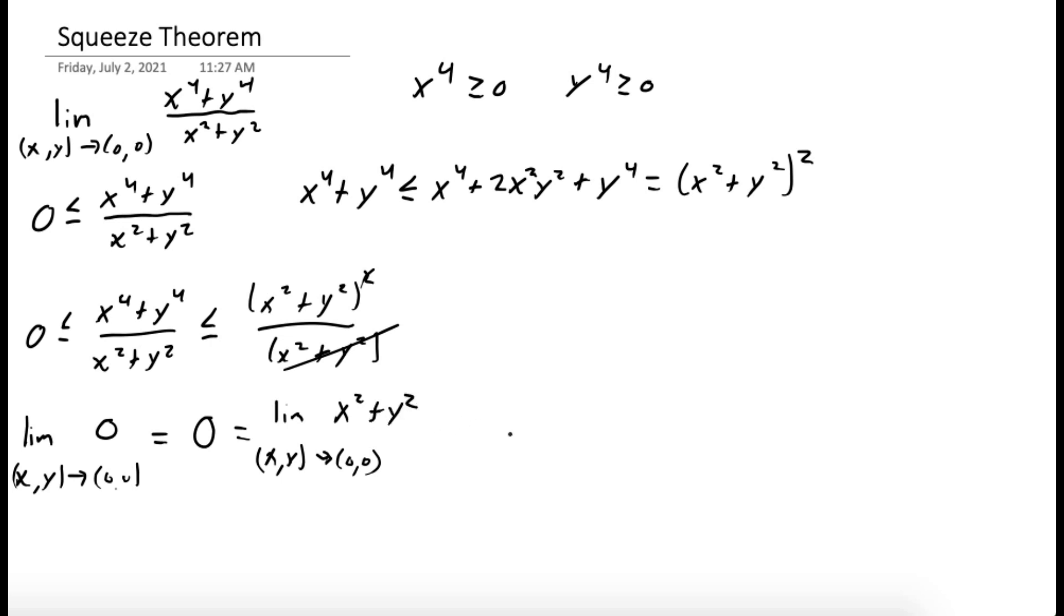So by the squeeze theorem, since our function is between those two functions, we know the limit as x and y goes to 0 of the function x to the fourth plus y to the fourth over x squared plus y squared is equal to 0.